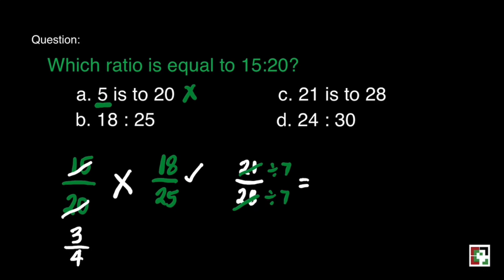Now let's move on to letter C. We have to reduce 21 is to 28 in lowest term. We can divide it by 7. 21 divided by 7 is equal to 3, and 28 divided by 7 is equal to 4. That's 3 fourths. Oh, that's a perfect match. 3 fourths and 3 fourths. So we can say that possible answer is letter C.